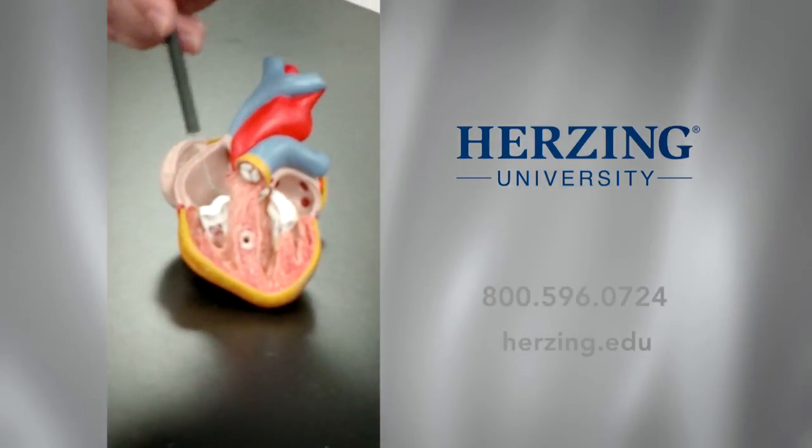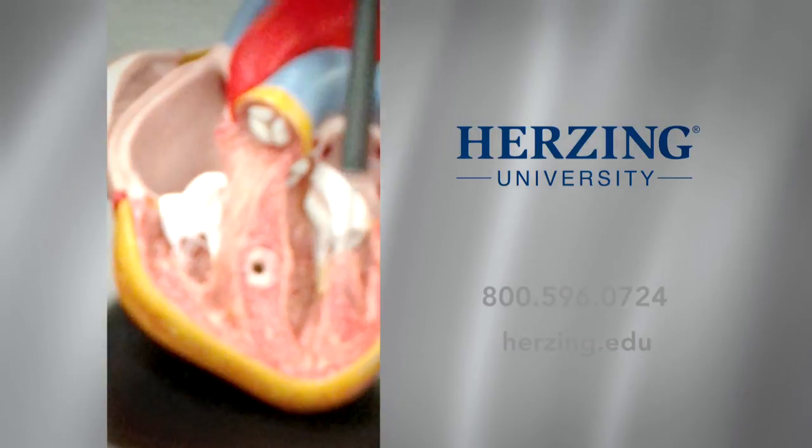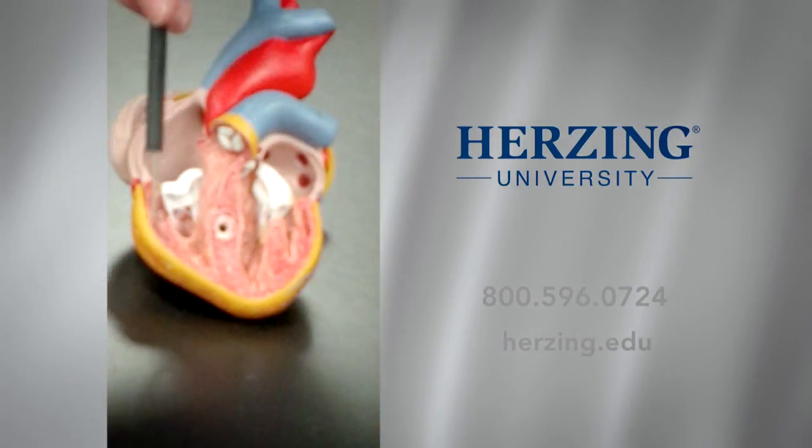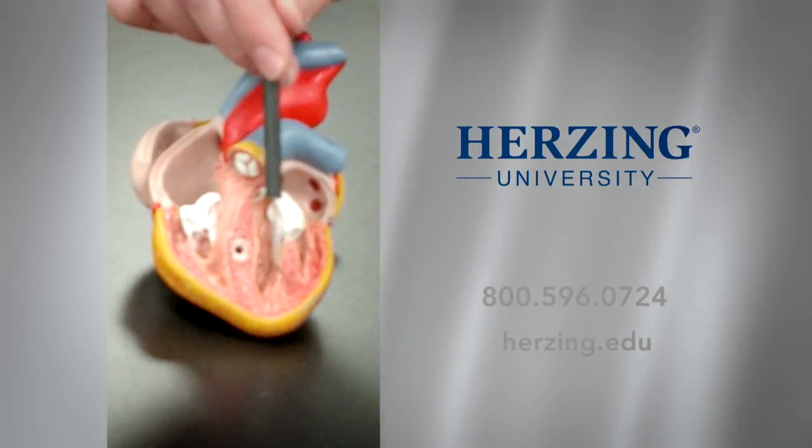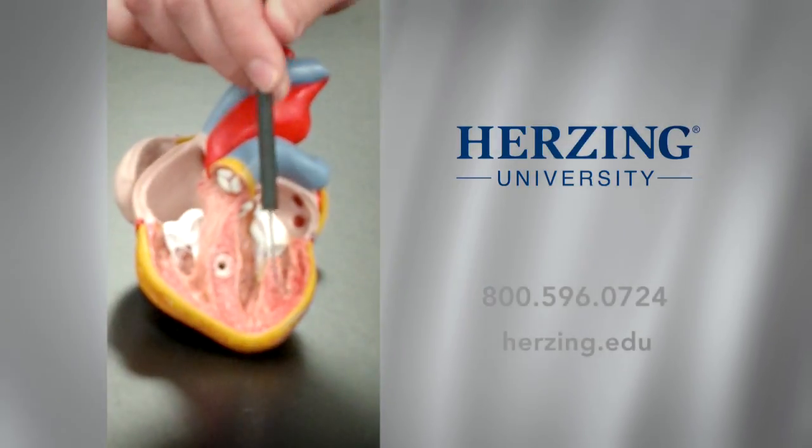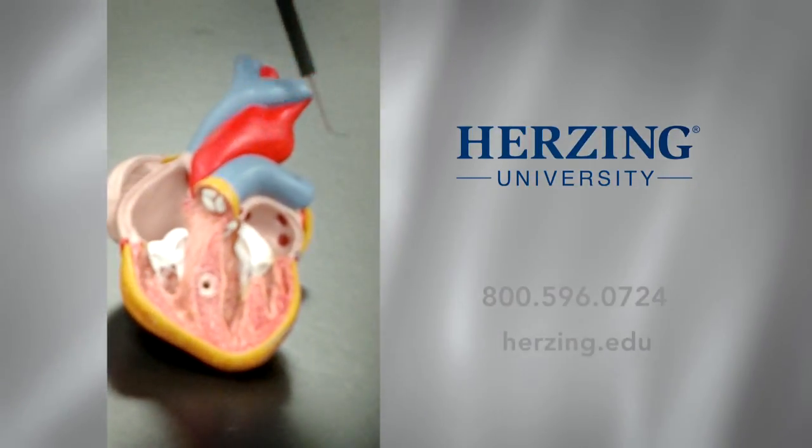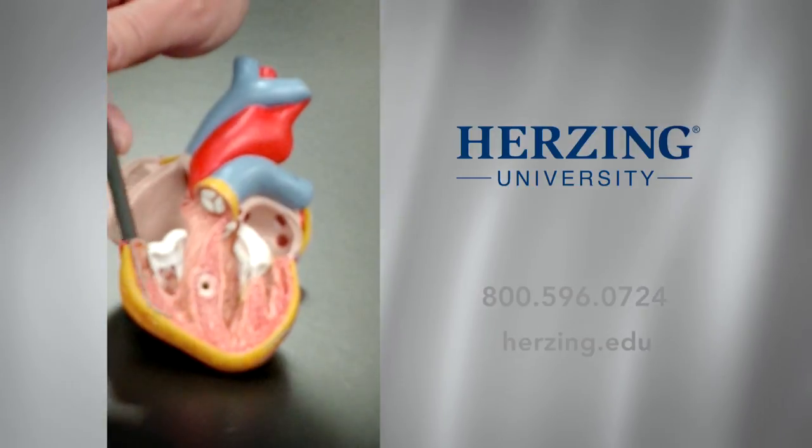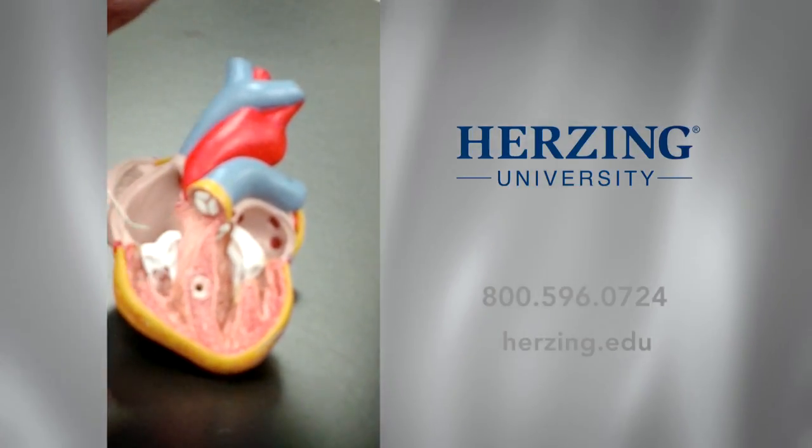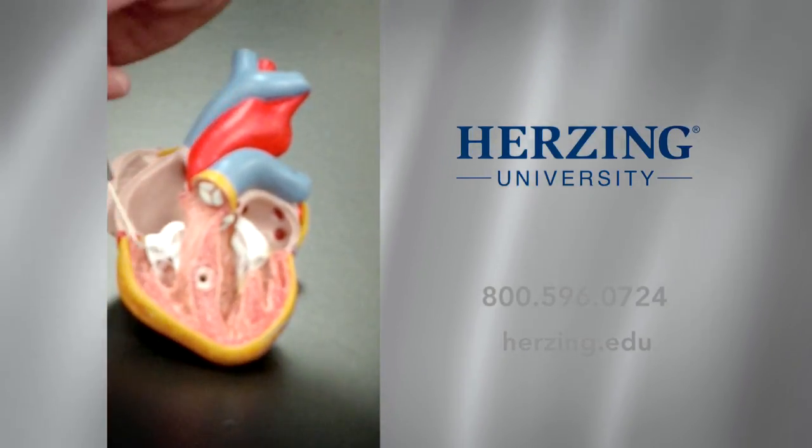A really cool thing to see here is the difference in the size of the wall from the left side and the right side. The left side is much bigger because it has to pump blood through the rest of the body, versus the right ventricle which only has to pump blood to the lungs to get oxygen to that blood.